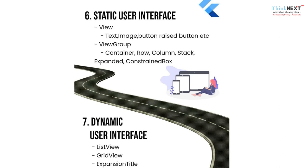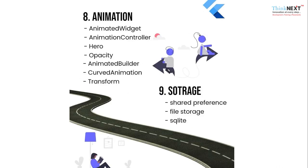Then we have dynamic interface. In dynamic interface we have list view, grid view. Then we have animated widgets: animated controller, hero widget, animated builder, curve animation, and transform. These are all the things we have to cover in animation.